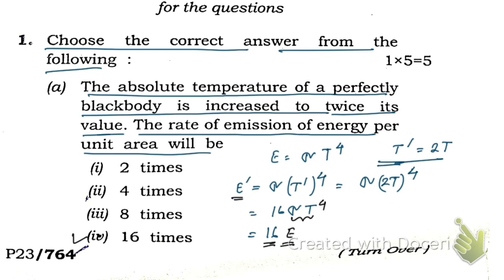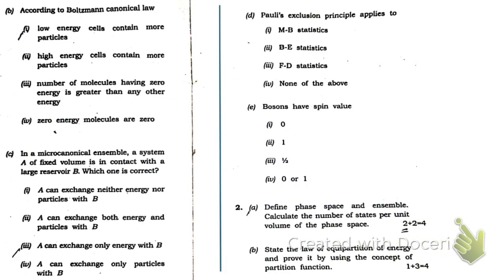Now let's move on to the next question. Part b: according to Boltzmann's canonical law, which option is correct? First you need to understand this relation: n_i = A·e^(-βE_i).